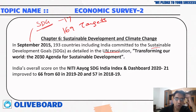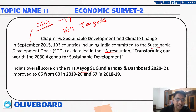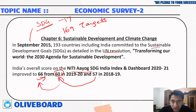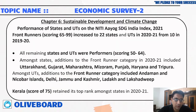NITI Aayog has created a separate SDG dashboard and index. India has increased its SDG score from 57 to 60 and now to 66. Kerala has the highest score of 75 and is the top-ranking state in India's SDG Index.